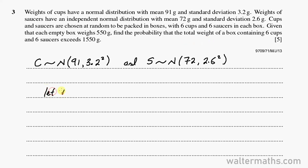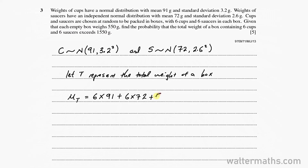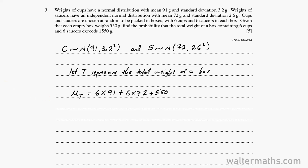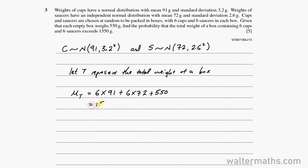Let T represent the total weight of the box. The mean of T should be 6 times the mean for the cups, which is 91, since we have 6 cups in a box, plus 6 times the mean for the saucers, which is 72, since we have 6 saucers in a box, and we also add the mass of each empty box, which is 550 grams. So that's 6 times 91 plus 6 times 72 plus 550, which gives us 1,528.